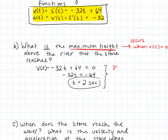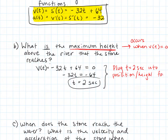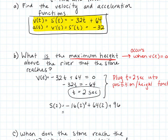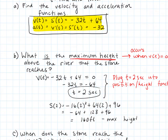Now we plug t equals 2 into the position function to find the actual max height. S of 2 is negative 16 times 2 squared plus 64 times 2 plus 96, which gives us negative 64 plus 128 plus 96, and we get 160 feet as the maximum height above the water. It's occurring at 2 seconds after the stone is thrown — that's when its velocity is equal to zero.